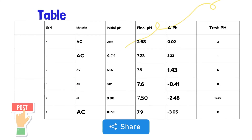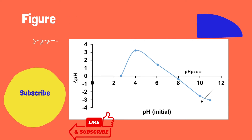Now, following these procedures, I have determined the point of zero charge for activated carbon, where the initial pH was this and after shaking, the final pH was this. So, the difference between initial and final pH — ΔpH — was this. So these are the experimental pH values. For the initial pH and ΔpH plotting, we get this curve.